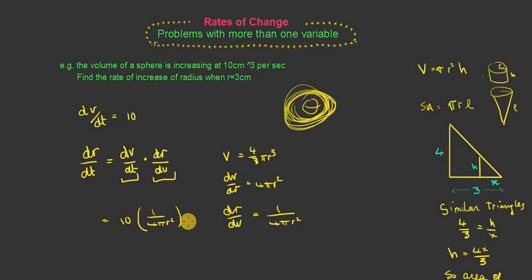It's getting bigger and bigger. And therefore the radius is going to increase as well. And this is the rate of change of that radius, 10 multiplied by 1 over 4 pi r squared. If you want to find the rate of increase of the radius when r is equal to 3, you just sub a 3 in for this over here.